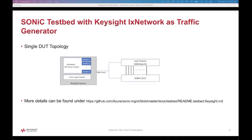Let's look at the Keysight testbed, which is defined under SONIC management. This is the single dot topology. The testbed server consists of the SONIC management docker along with the ix network API server docker, which in turn is connected to the ixia chassis along with the SONIC DUT. Both the ixia chassis and SONIC DUT have physical links connected. More details about these topologies can be found under this page.